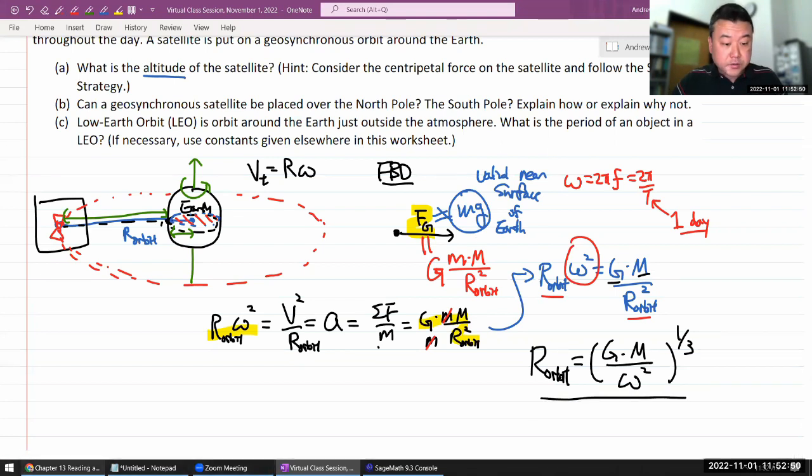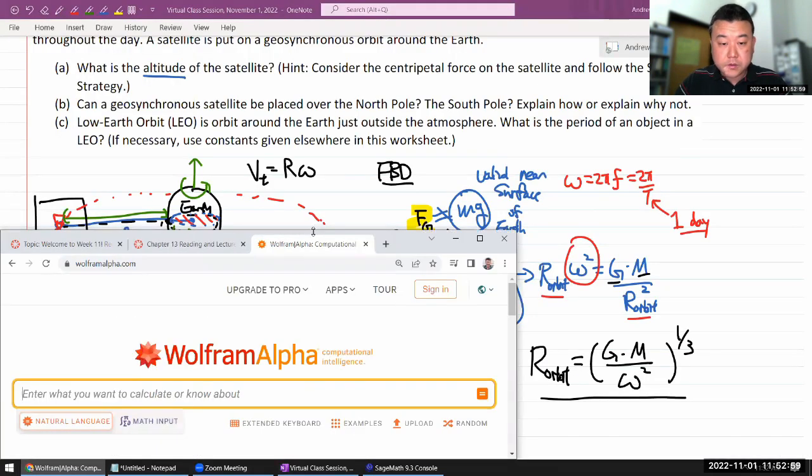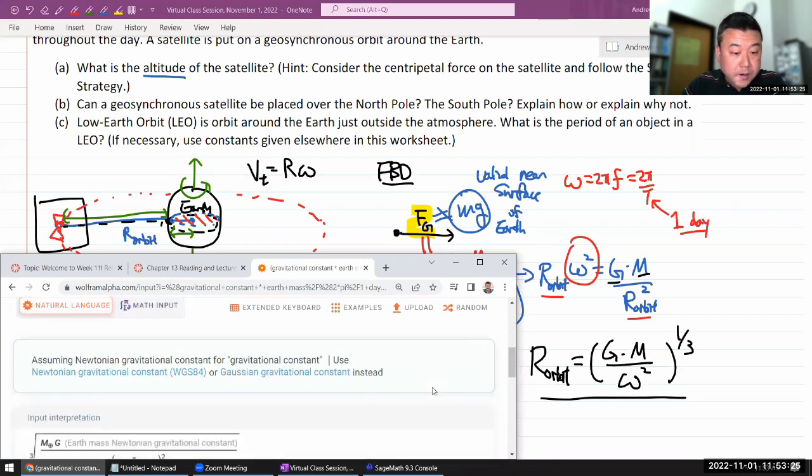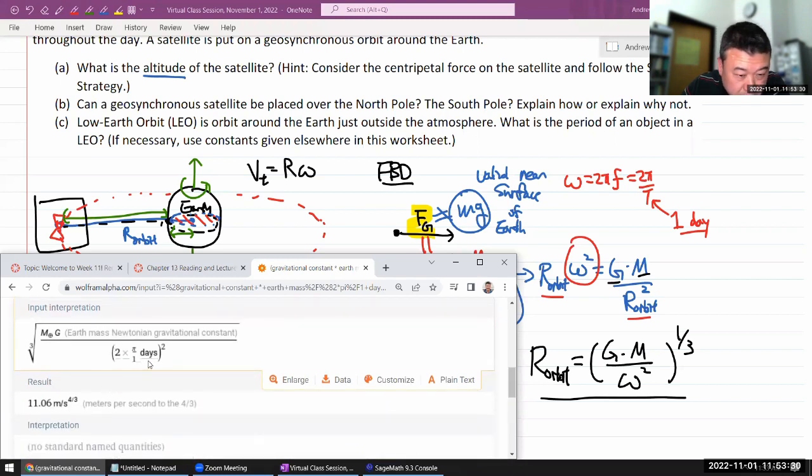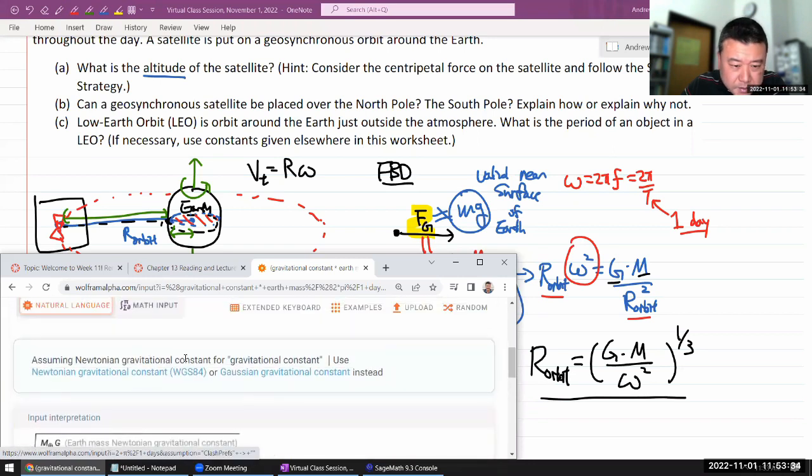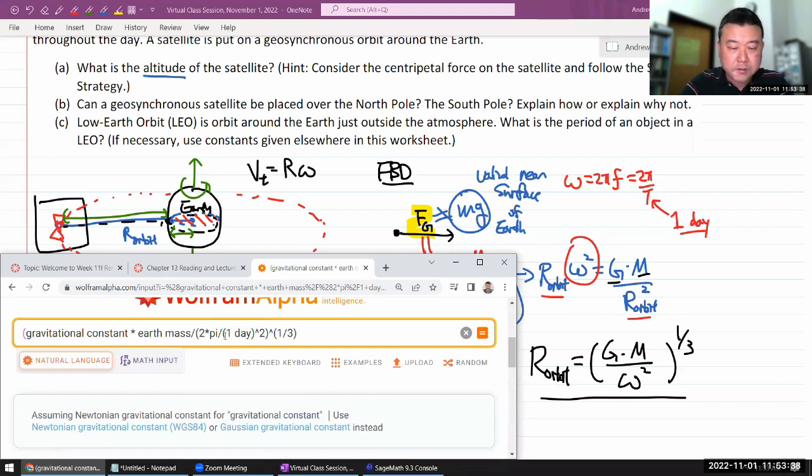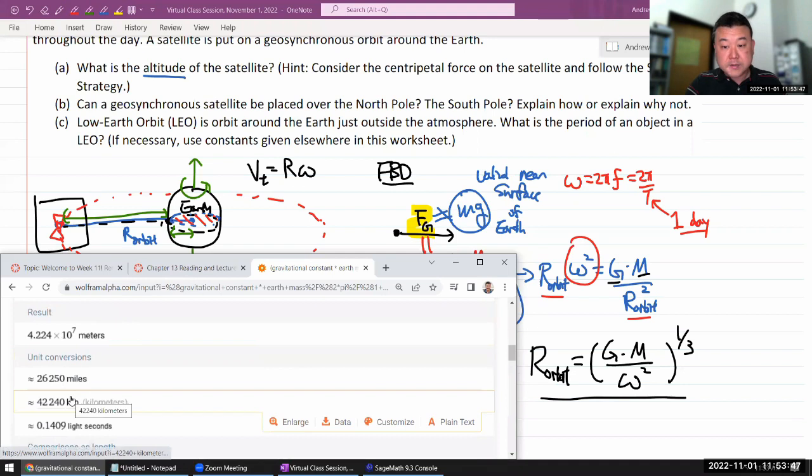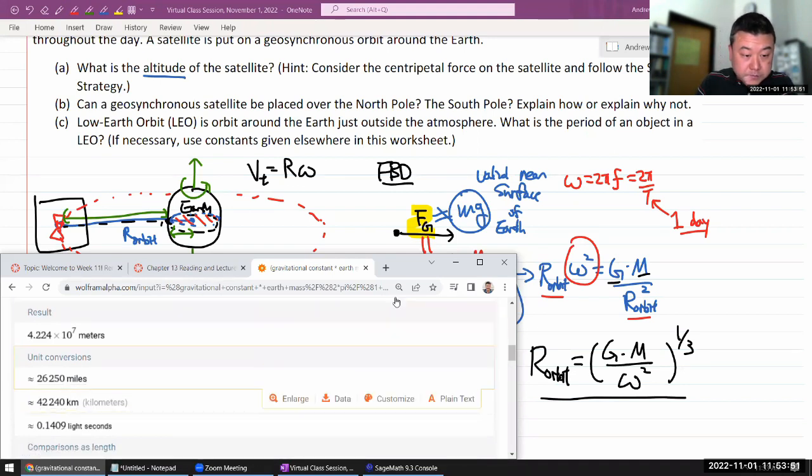So let me plug the numbers into Wolfram Alpha. We have R_orbit, which will be gravitational constant times Earth's mass divided by... And I have to write out omega 2 times π divided by 1 day squared. All of that to one third power for cube root. So yeah, let's check how Wolfram Alpha understood my input. That looks good, I think. Oh, okay. It had a bit of an issue. It didn't quite put the day on the correct side of the fraction. So extra parentheses to make sure it puts the day on the correct side. Okay